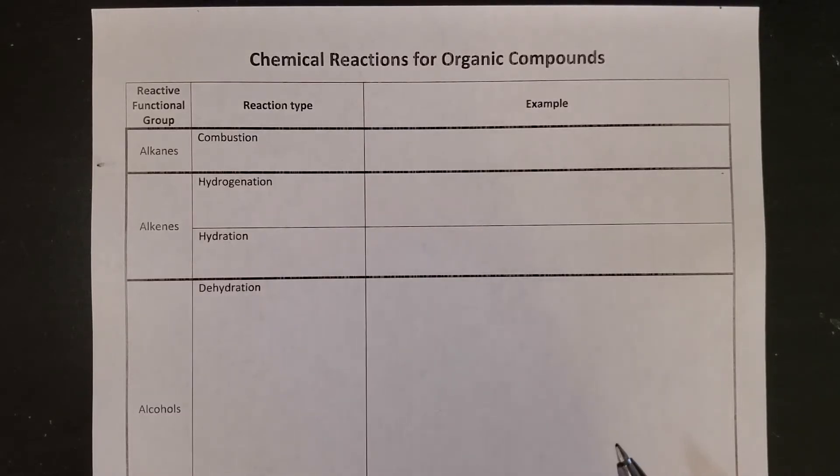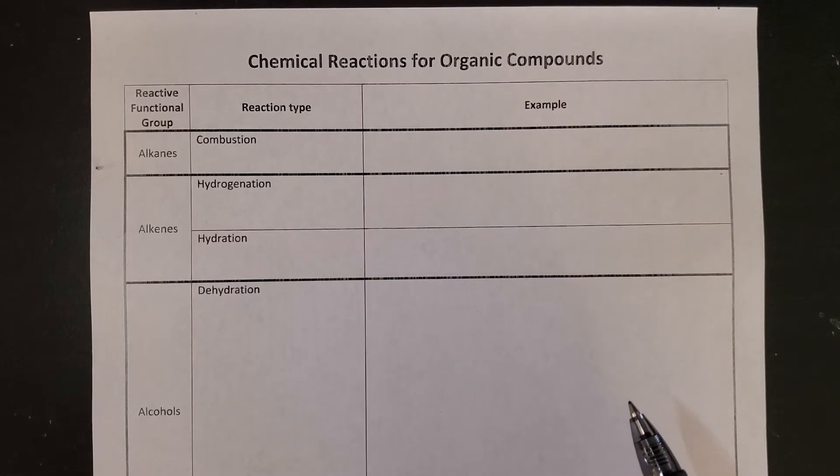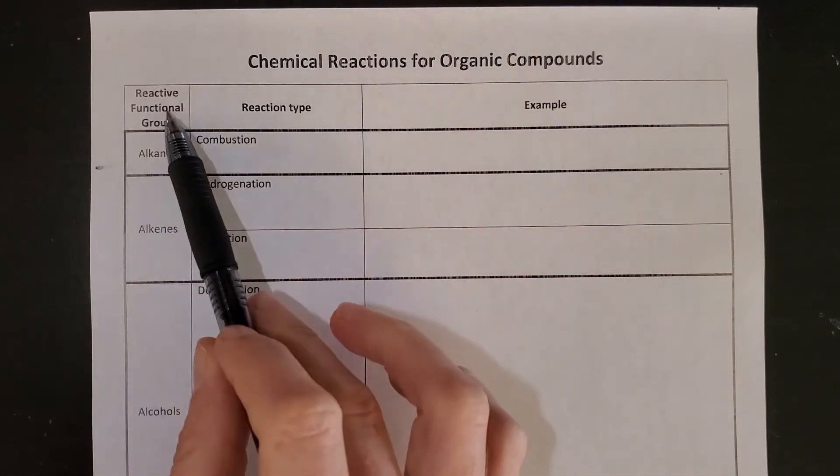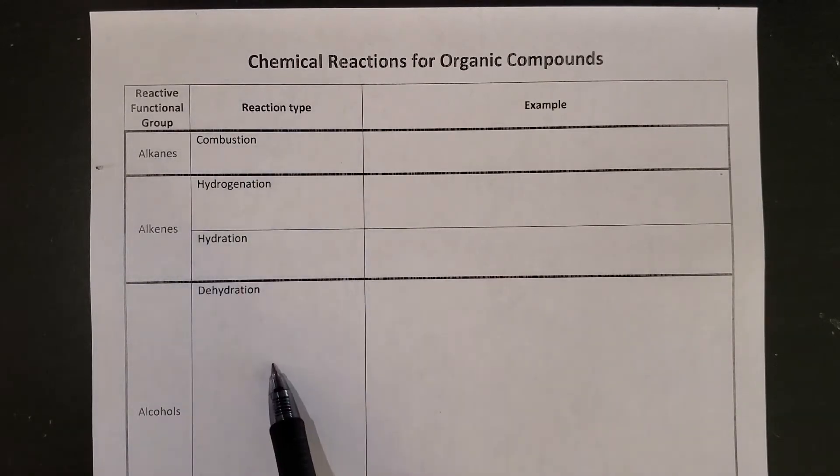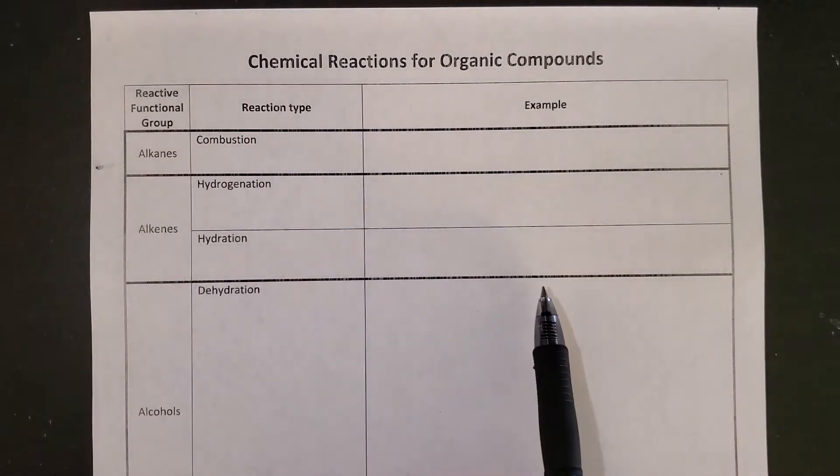Hi, we're going to do a lightning round review of some of the reactions that we've seen so far for organic compounds. So reactive functional group, alkanes, reaction type, we've got some of those entered already, and I'm going to give you an example of each of them.